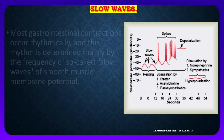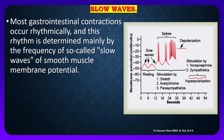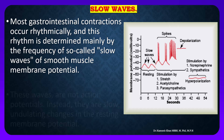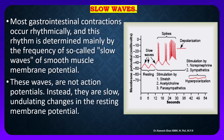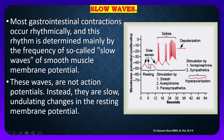Most gastrointestinal contractions occur rhythmically, and this rhythm is determined mainly by the frequency of so-called slow waves of smooth muscle membrane potential. These are not action potentials; instead, they are slow undulating changes in the resting membrane potential — small undulating waves generated by undulant changes in the resting membrane potential.